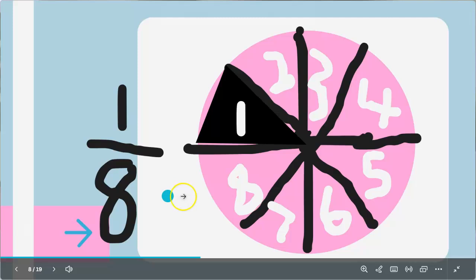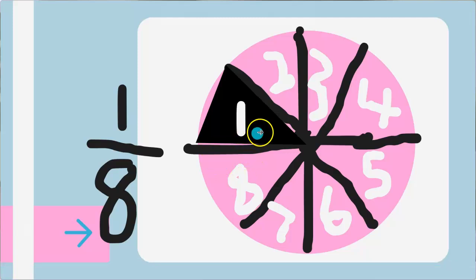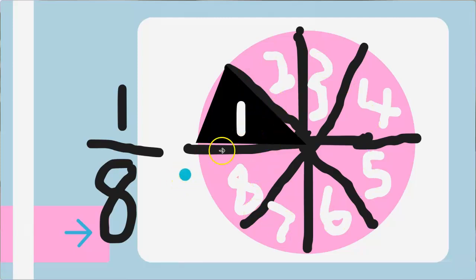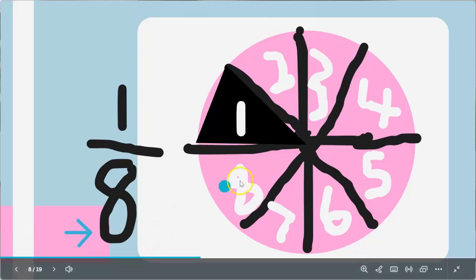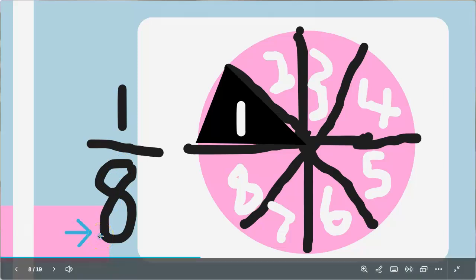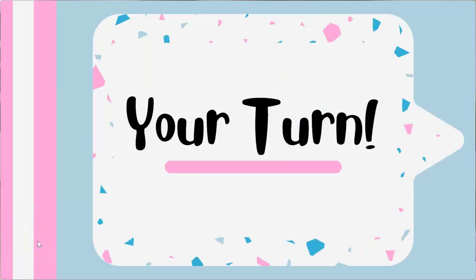Now look at this — we have one part out of eight parts shaded. Before this part was shaded, we had one, two, three, four, five, six, seven, eight — eight parts total. So we say one out of eight parts is shaded, which is one over eight. Repeat after me: one over eight. Good job! Now it's your turn.